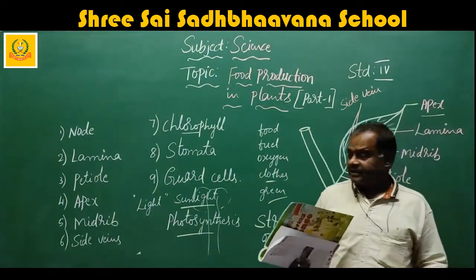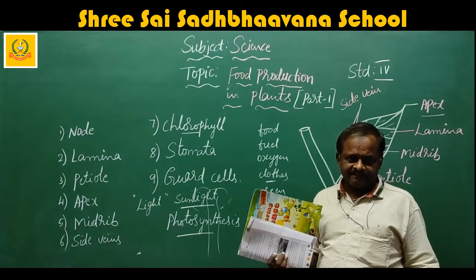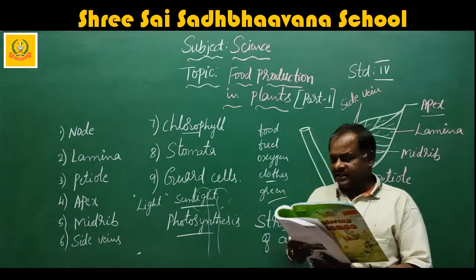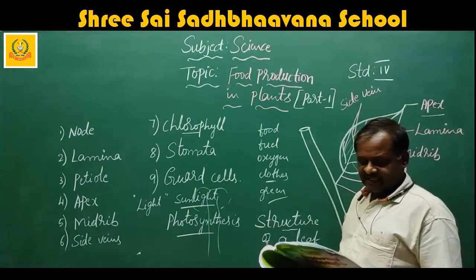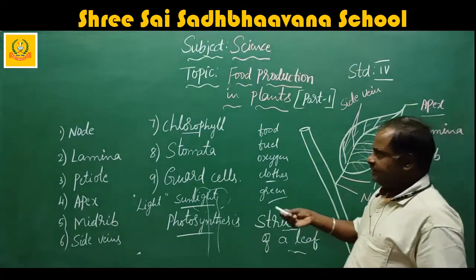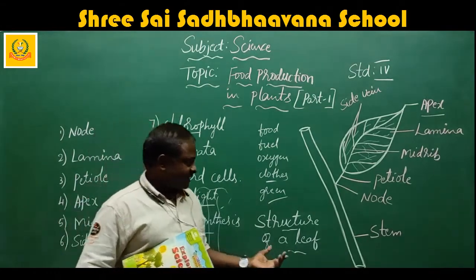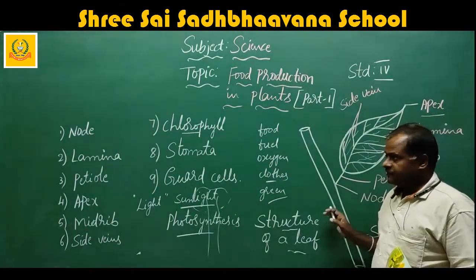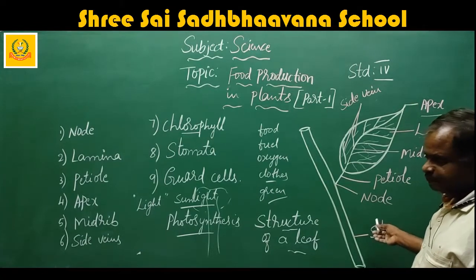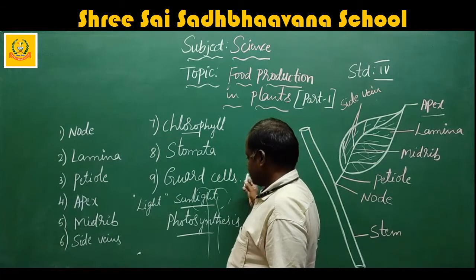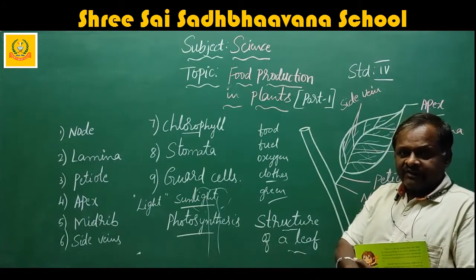During photosynthesis, food is prepared and the plant releases oxygen, which is necessary for our breathing. This photosynthesis takes place only during the daytime using sunlight. I hope you understand well how plants prepare food. The structure of the leaf includes the node, petiole, midrib, lamina, apex, side vein and stem. I have also explained what is chlorophyll, stomata, guard cells, and what is photosynthesis — how plants prepare food and how plants are very useful to us.